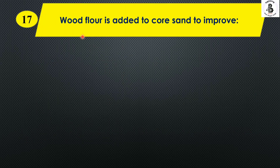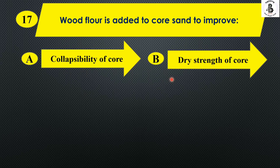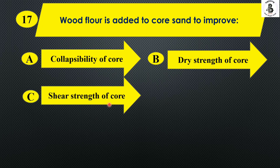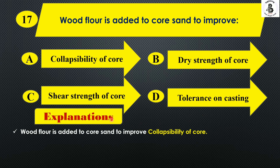Wood flour is added to core sand to improve: Option A collapsibility of core, Option B dry strength of core, Option C shear strength of core, and Option D tolerance on casting. For easily removing the core from the sand mold when making a hollow casting, wood flour is added to the core sand.